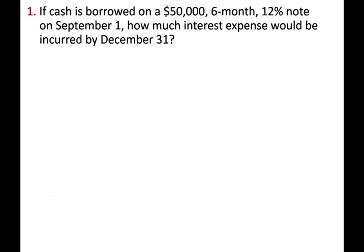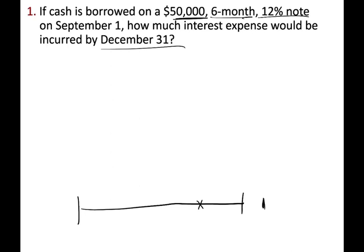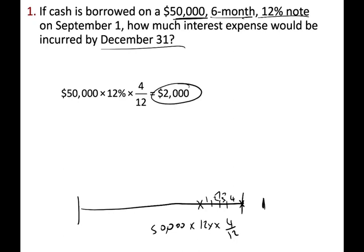Let's look at a few examples. If cash is borrowed on a $50,000, six-month, 12% note on September 1st, how much interest expense is incurred by December 31st? From September through December you have four months. So: $50,000 times 12% times 4/12 equals $2,000 of accrued interest. On December 31st, you debit interest expense $2,000 and credit interest payable $2,000.